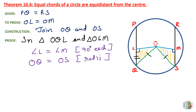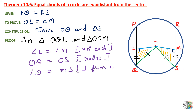Now, LQ is also equal to MS. How are these two equal? Because we have given that the two chords PQ and RS are the same length. And we draw OL and OM perpendicular to the chords. When we draw a perpendicular from the center, it bisects the chord — divides it into two equal parts. So if the two chord lengths are the same, their halves are also the same. Therefore, LQ is equal to MS because the perpendicular from the center bisects the chord.